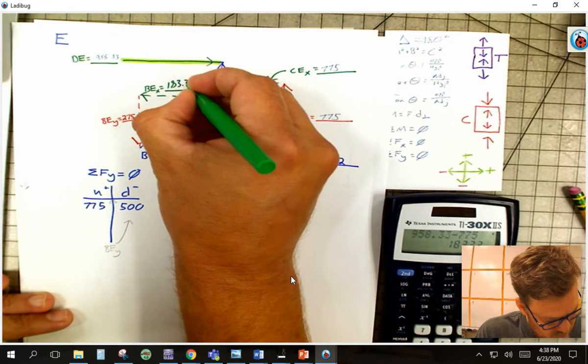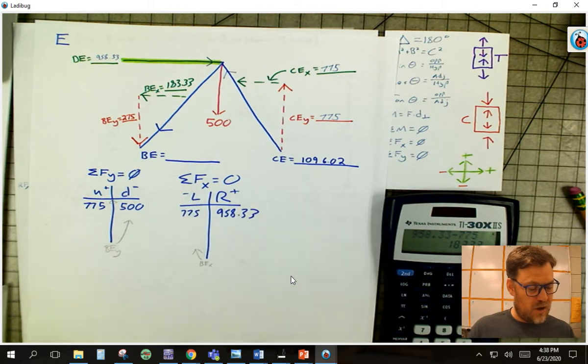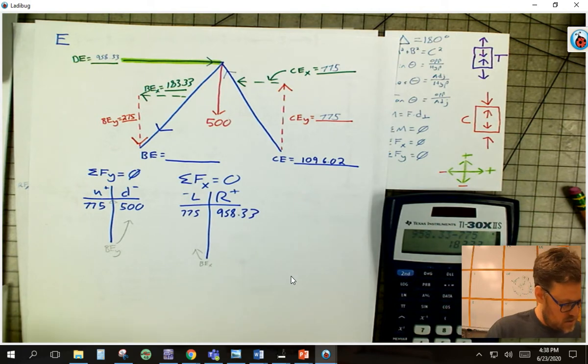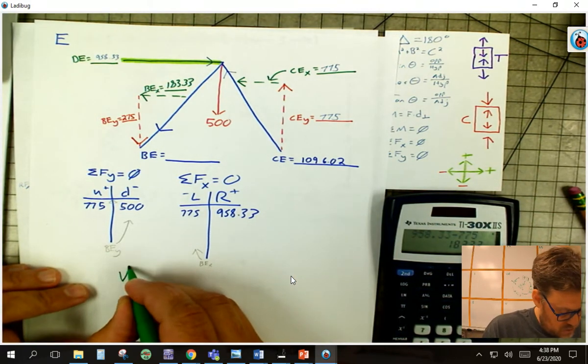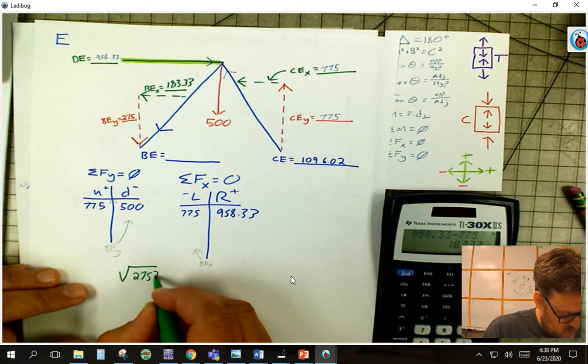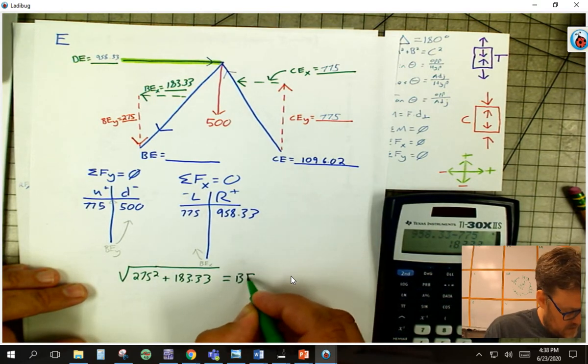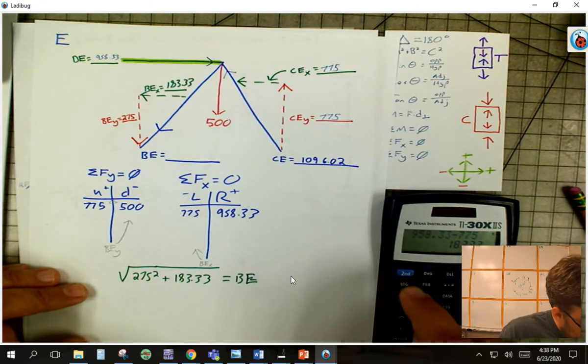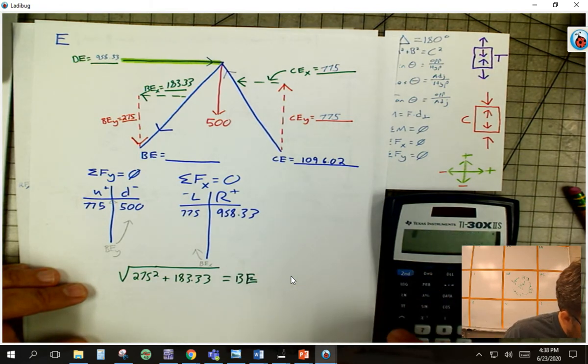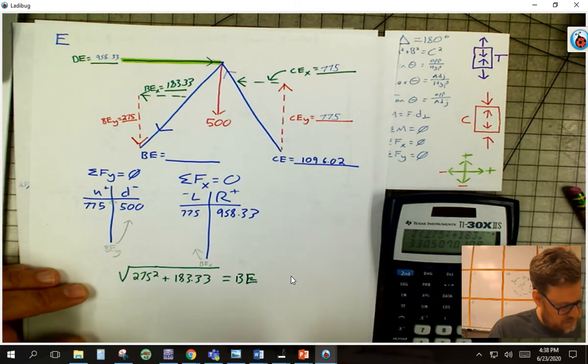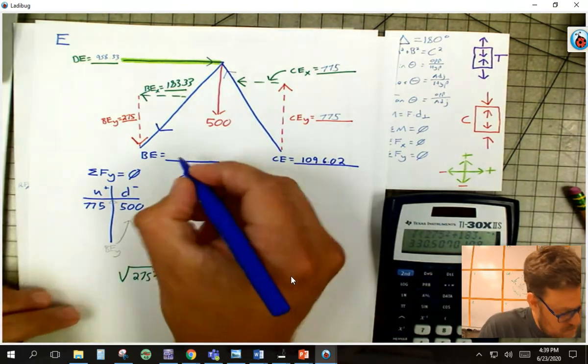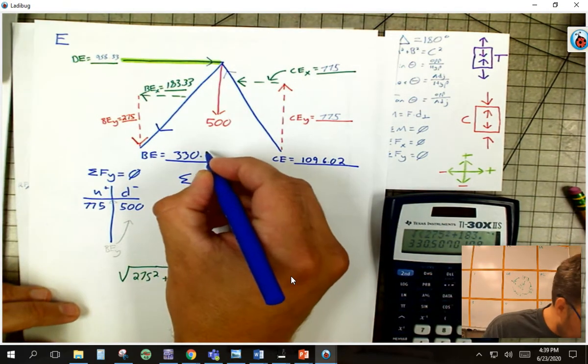So now the only thing I've got left to do is solve for BE. And I can do the Pythagorean theorem there. So I'm going to have square root of 275 squared plus 183.33, and that's going to give me BE. So I'll put that in my calculator. Square root 275 squared plus 183.33 squared gives me 330.50.